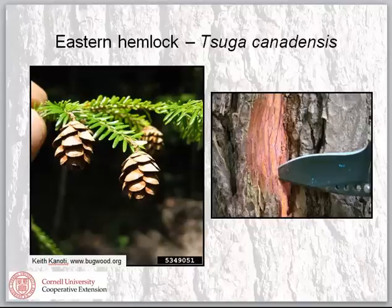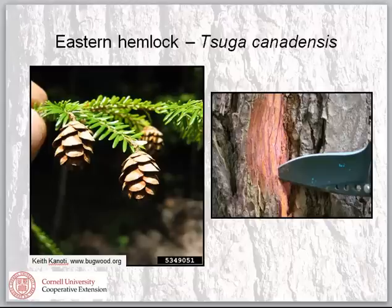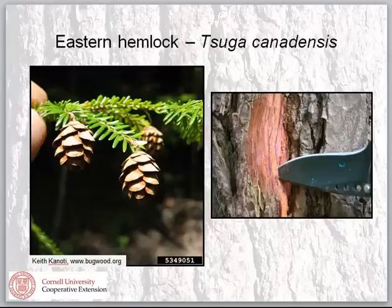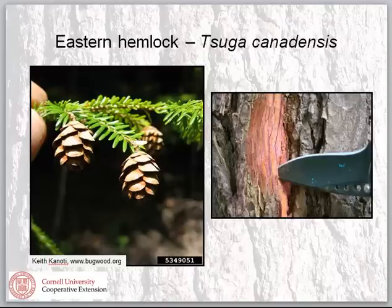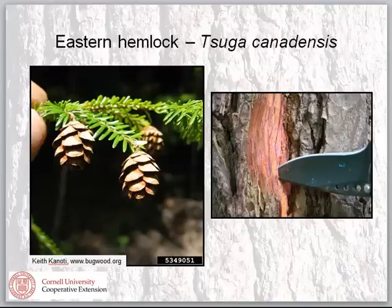The fruit of eastern hemlock are cute little cones about the size of a small marble — attractive from an ornamental perspective. Diagnostic is the bark: when you cut it at the appropriate angle, you'll see that between layers of bark there is a purplish film or membrane, creating purple striations in the bark. In the Northeast, the only tree displaying those purple striations is eastern hemlock. The bark itself goes from a younger form to dark and blocky at maturity.